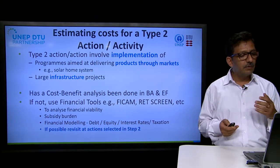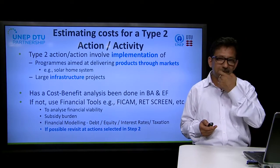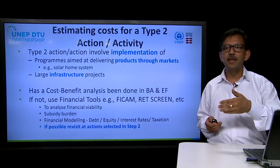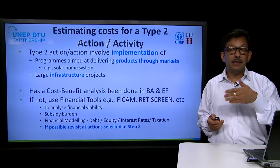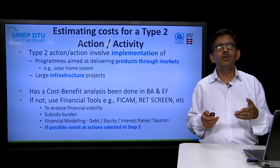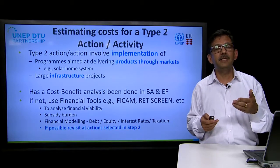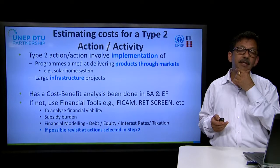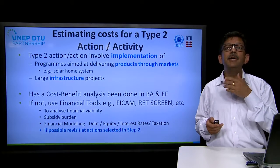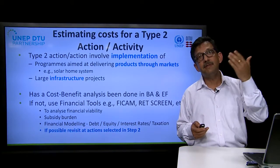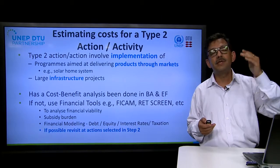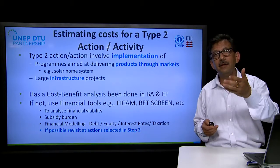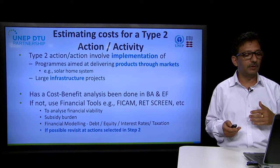Since you are looking at a particular action identified in the TAP for evaluation, it is possible that stakeholders have identified an action which has no major impact on improving the financial viability of the technology. In such a case, it may be desirable to go back and revisit the original set of measures in the barrier analysis and enabling framework report, to see whether they can improve the viability for that particular technology.